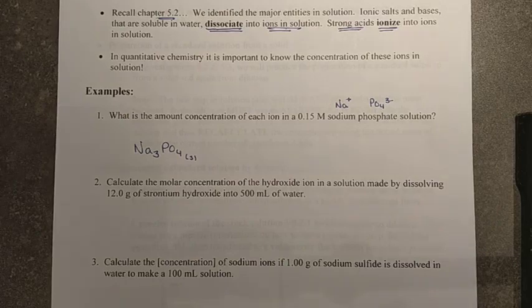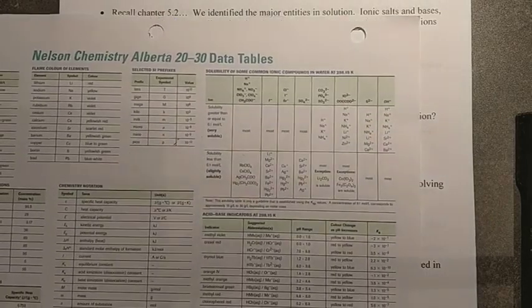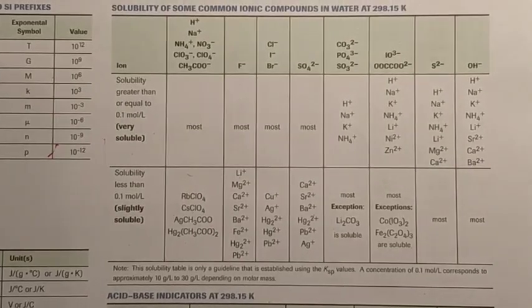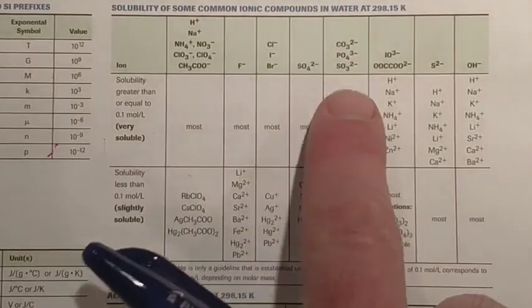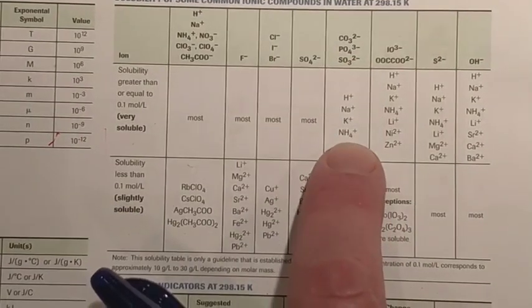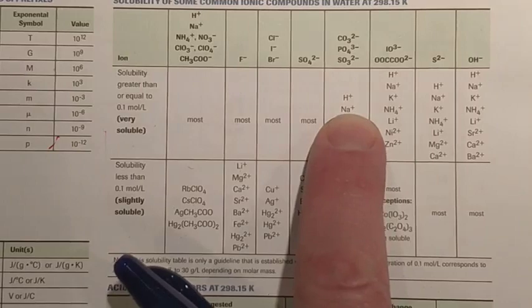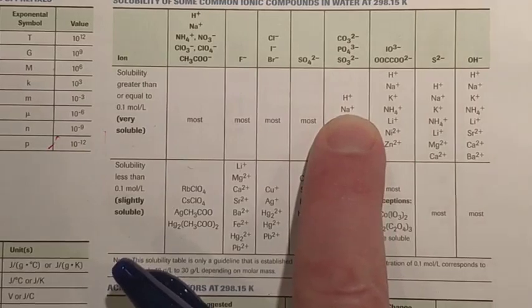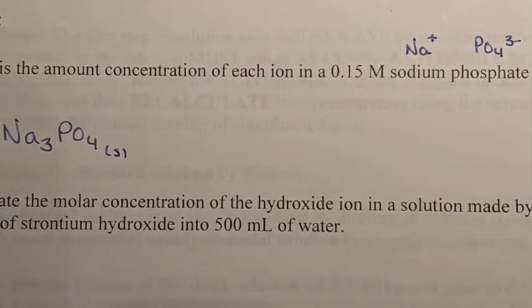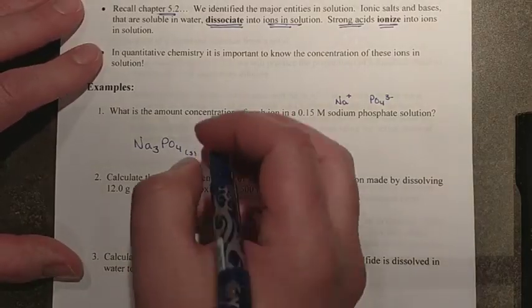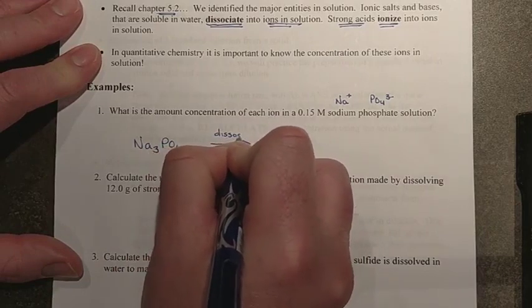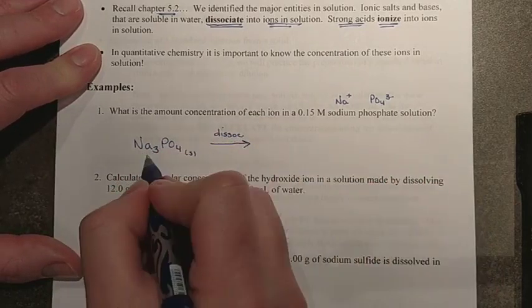We need to see if this is going to dissolve. Now I would assume most of these things will, otherwise why would we give you a whole bunch of questions in which they don't. So there's phosphate, these are the things that will be soluble with phosphate, and you can see sodium right there. So this one does dissolve and therefore dissociates.